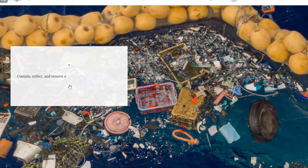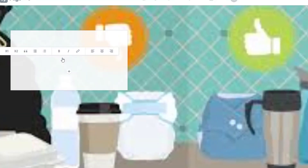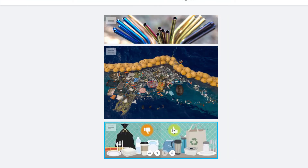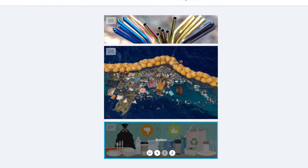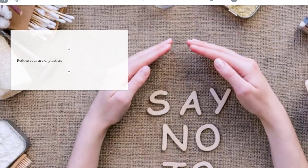If you need to edit your Glide Show — for instance, this picture of mine that I chose is very blurry — you just need to click on one of the pictures and choose Edit Photos. Then you can replace or add photos as needed. That looks a lot better.